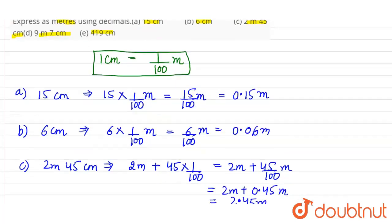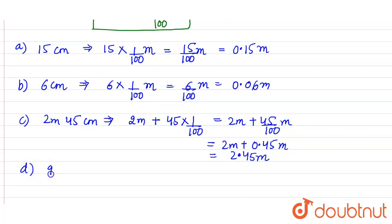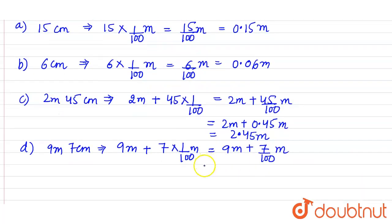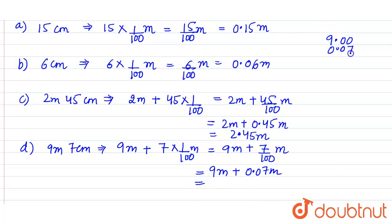Part D is 9 meter 7 centimeter. The 9 meters are already in meters. We convert 7 centimeter to meter: 7 into 1 by 100 equals 7 by 100, written as 0.07. So 9 meter plus 0.07 meter equals 9.07 meter.